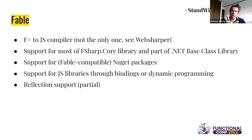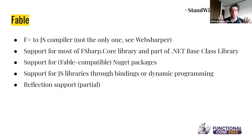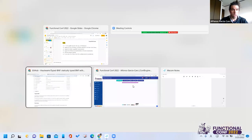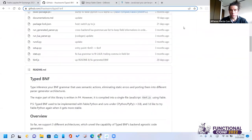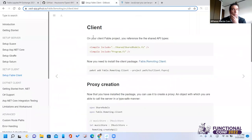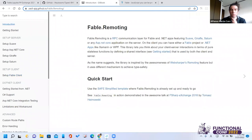Fable has some support for reflection — it's partial, not complete — because we also support tree-shaking, which means parts of your application not being used will be removed from the JavaScript bundle. This is very important in JavaScript because we want to deploy as little code as possible so websites load fast. Still, we have projects like Fable Remoting, which allows you — through the use of reflection in Fable and .NET F# servers — to automatically generate an HTTP API out of types.